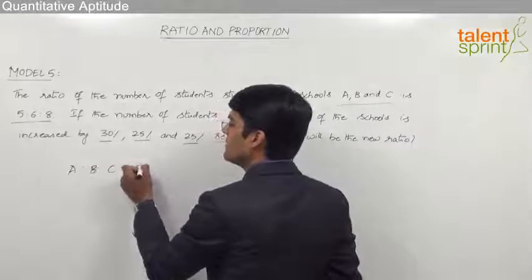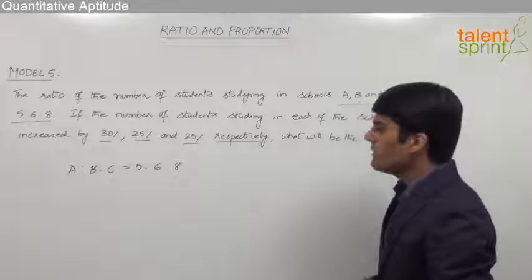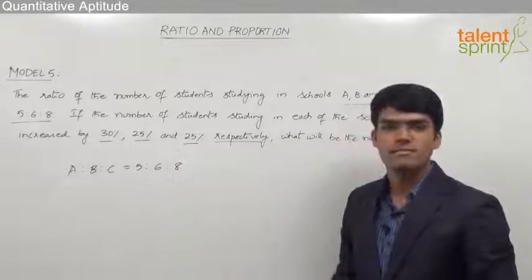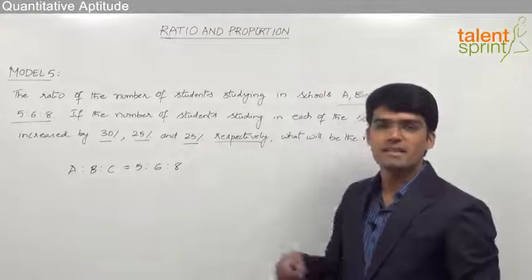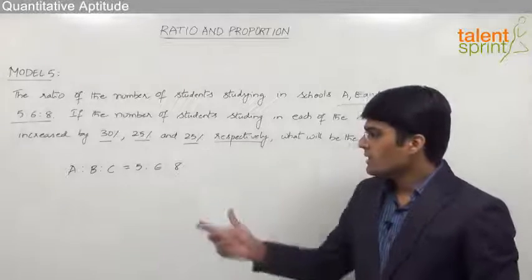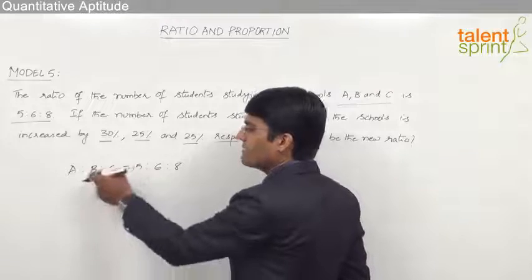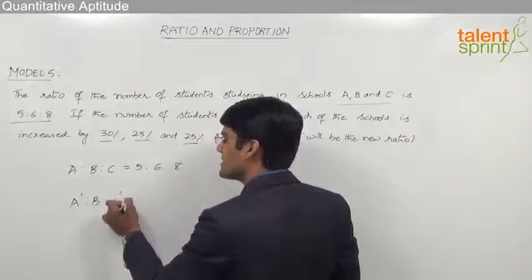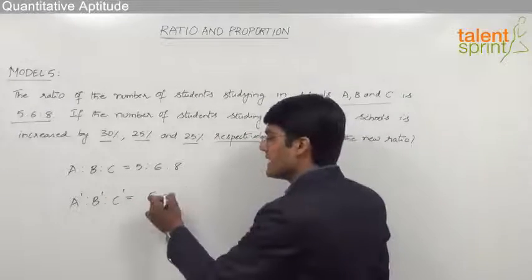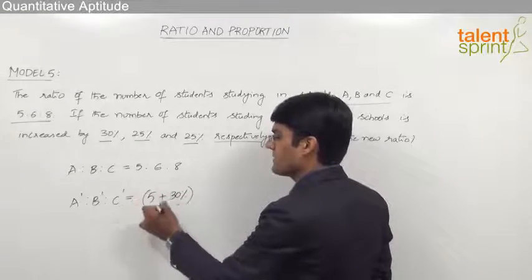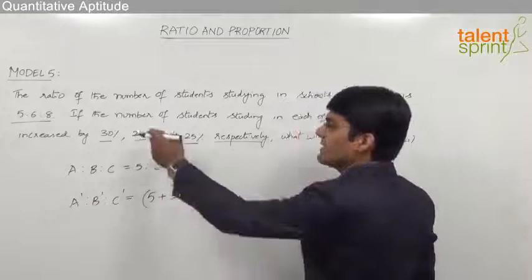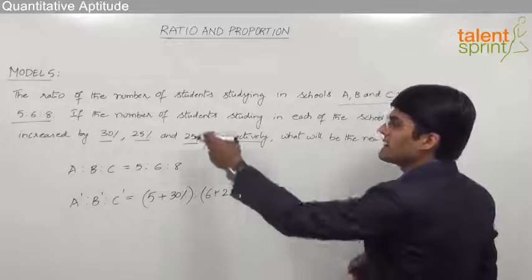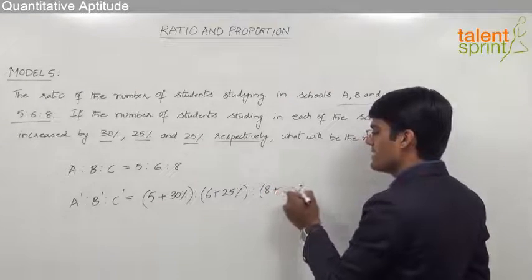The original ratio A:B:C is equal to 5:6:8. The number of students in school A have increased by 30%, school B by 25%, and school C by 25%. So let us add these percentage increments to each of their parts. A has 5 parts, B has 6 parts, and C has 8 parts. The new ratio A':B':C' equals 5 plus 30% of 5, is to 6 plus 25% of 6, is to 8 plus 25% of 8.